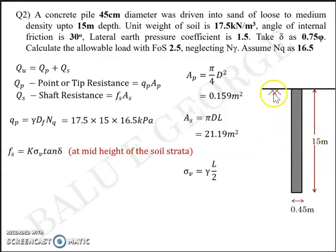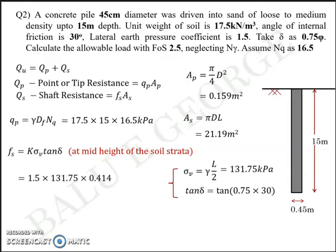L is 15 meters. You take the σv at the mid depth because you have zero σv at the top and maximum σv at the bottom. So to be fair with the question you take the σv at the mid depth which is γ into L by 2 which turns out to have a value of 131.75 kilopascal and K is already given in the question directly as 1.5. Lateral earth pressure coefficient is 1.5. σv is 131. Now we need tan δ for which you are given delta as 0.75φ. Phi is already given as 30 degrees. So tan δ is equal to tan 0.75 into 30.